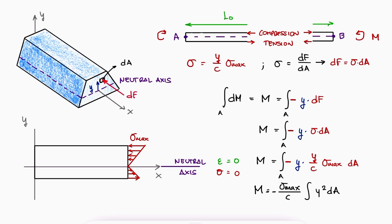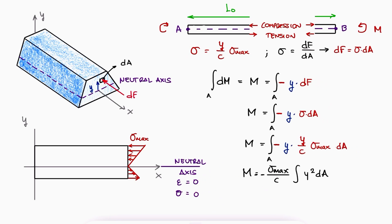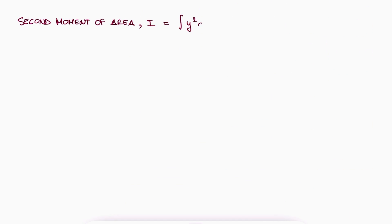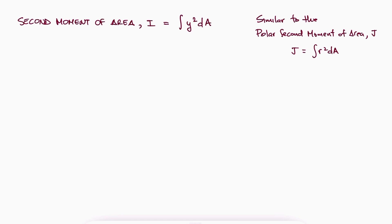Solving for sigma max, we find an expression that allows us to calculate the maximum normal stress due to bending in terms of the moment, the distance to the neutral axis, and what we call the second moment of area. This second moment of area is similar to the polar second moment of area that we studied in the torsion stress video — link below if you need a refresher. The difference here is that we're using Cartesian coordinates instead of polar coordinates, hence the name J.